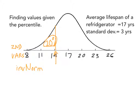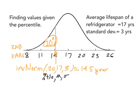Inverse norm works in a backwards sort of way. We know the percentage is 20%, but we want to know what value would place us there. When typing this in, it's the percentile — the percentage to the left — then the average, and the standard deviation in that order. If you do that on the calculator, you get about 14.5 years. Inverse norm will tell you the value on the x-axis.